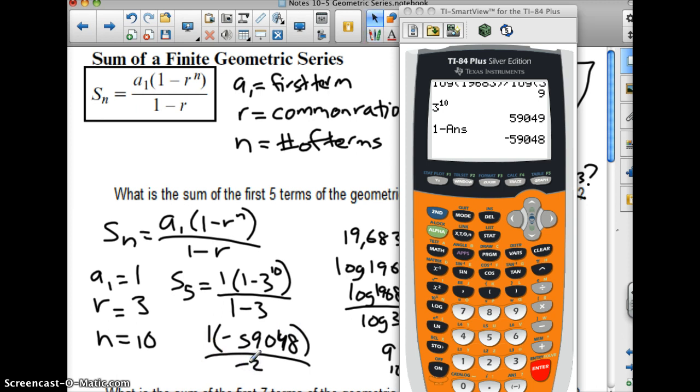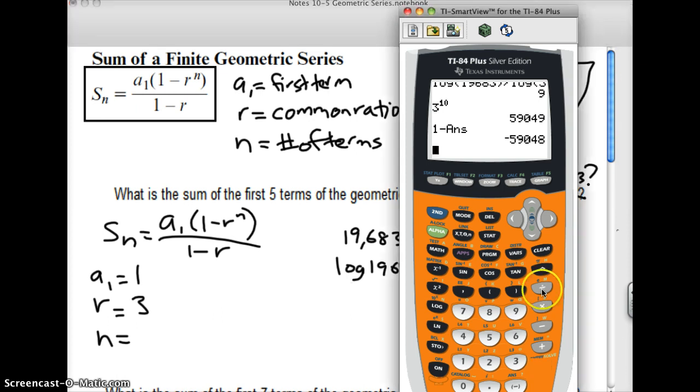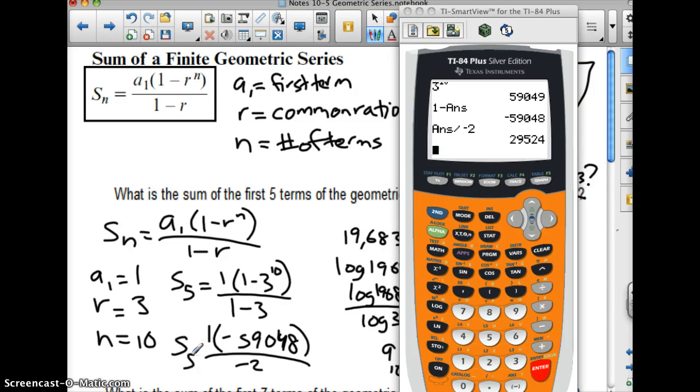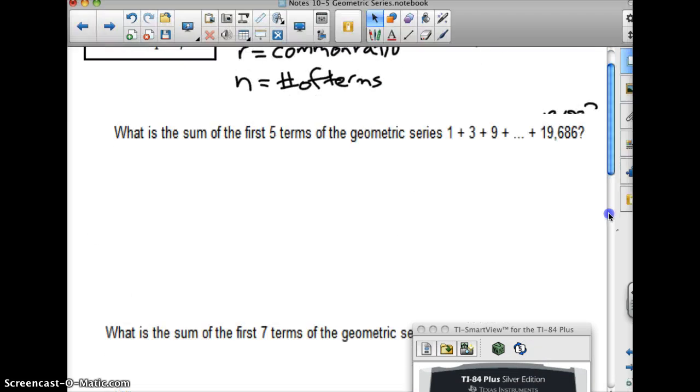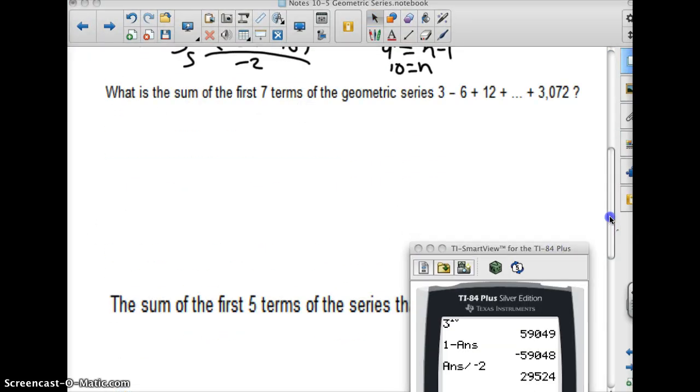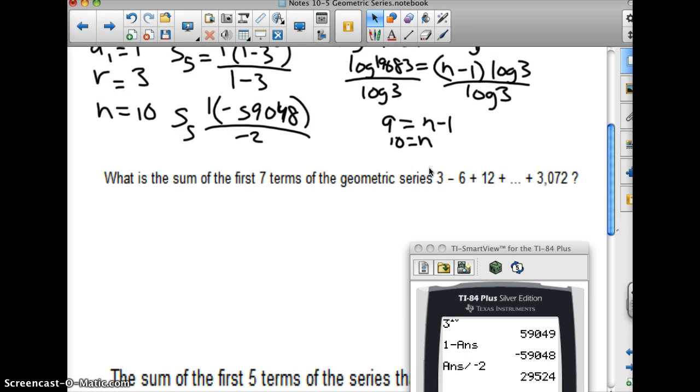When you multiply that by 1, you get that same number. I can divide by negative 2, and I'm going to get 29,524. S of 5 equals 29,524.